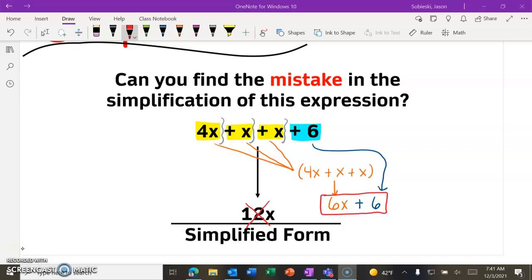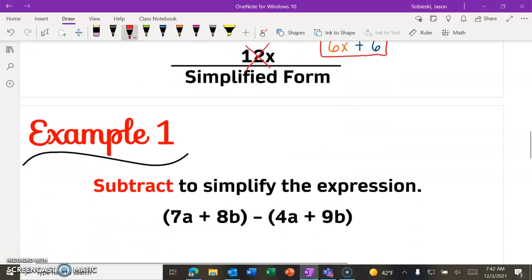you're going to see that you only can combine 4x plus x plus x, which is going to result in 6x. The 6, the positive 6 constant, cannot be combined, right? And it looks like that's the mistake that this person made when they simplified. They thought in our final answer here that we could combine the 6 and the 6x, which we cannot.